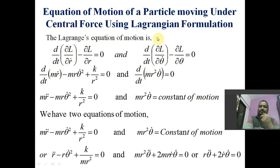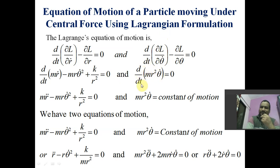The Lagrange equations of motion give two equations — one for the r coordinate and one for the theta coordinate. For the r coordinate, substituting del L by del r-dot equal to m r-dot, we get d by dt of m r-dot minus m r theta-dot squared minus k upon r squared equal to 0, which becomes m r-double-dot minus m r theta-dot squared plus k upon r squared equal to 0.